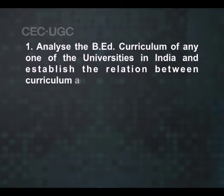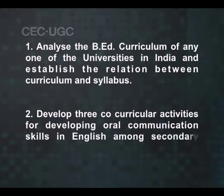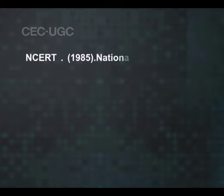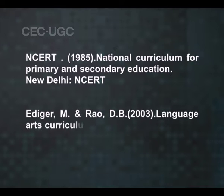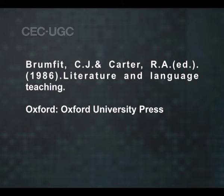Before we move to the next session, please try to answer the following questions: Analyze the BA curriculum of any one of the universities in India and establish the relation between curriculum and syllabus. Develop three co-curricular activities for developing oral communication skills in English among secondary school students. Here are some books for your references: Curriculum Development Theory and Practice by H. Taba, 1962, Harcourt, New York. National Curriculum for Primary and Secondary Education, NCERT, 1985, NCERT, New Delhi. Language Arts Curriculum by M. Edgar and D.B. Rao, 2003, Discovery, New Delhi. Literature and Language Teaching by C.J. Brumfit and R.A. Carter, 1986, Oxford University Press, Oxford. Hope you enjoyed the session. See you next time. Bye.